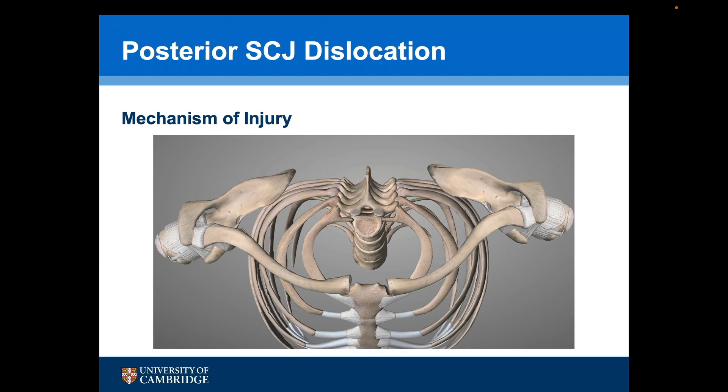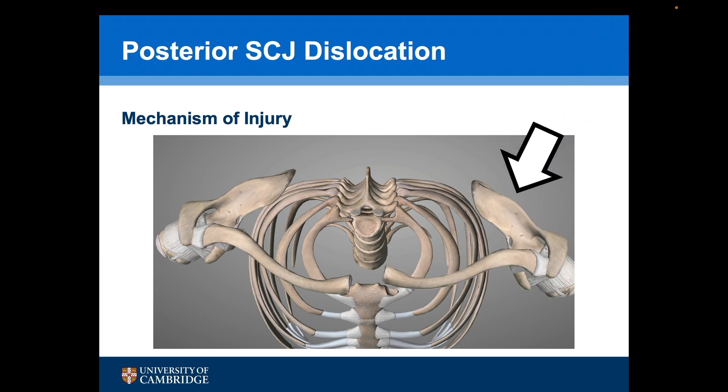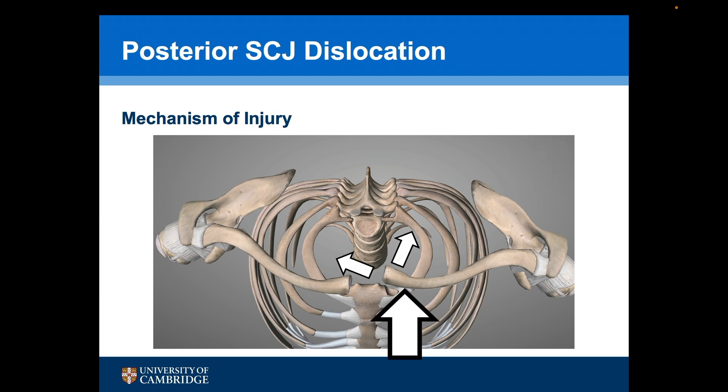The normal mechanism of injury is due to an oblique force to the posterior lateral aspect of the shoulder. This drives the scapula forwards and the medial end of the clavicle is driven posteriorly and also medially. Occasionally this can occur due to a direct anterior force.